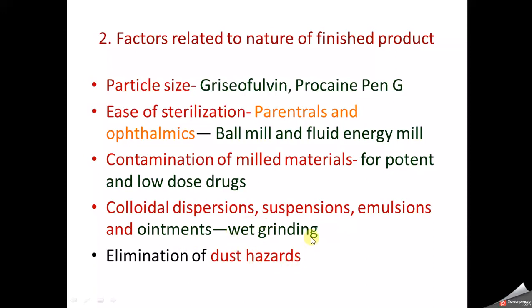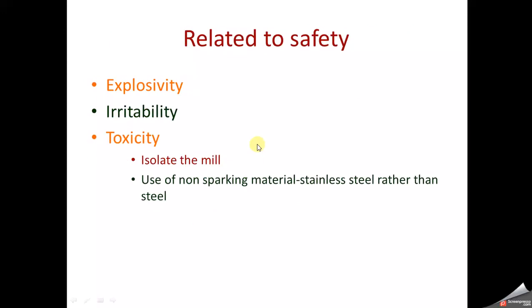The next factor is safety. We must consider the nature of the material to be reduced: whether it is explosive, irritable, or toxic. In all circumstances where safety is a concern, the mill where size reduction is carried out must be isolated, and non-sparking materials like stainless steel should be used rather than regular steel.